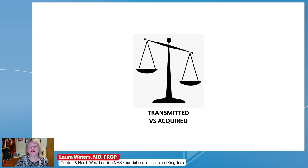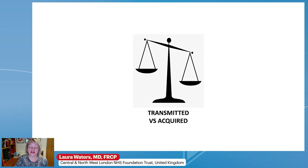Transmitted resistance is where somebody acquires HIV with mutations that already conferred drug resistance, or acquired resistance where it develops for the first time in an individual where there's been viral replication in the presence of suboptimal drug concentrations. Transmitted resistance is the reason we do baseline testing.